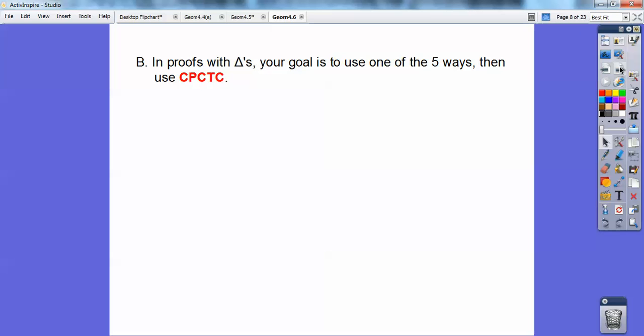So in proofs with triangles, your goal is to use one of those five ways to get them congruent, and then you're going to use what's called corresponding parts of congruent triangles are congruent. Okay, CPCTC is always your reason after each statement of congruent triangles. I'll come back to that in just a second.